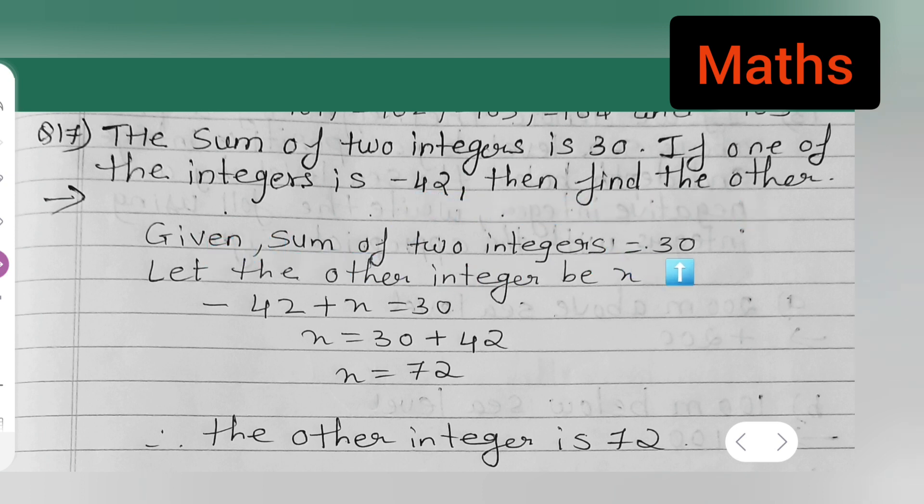Given: sum of two integers is 30. Let the other integer be x. We don't know the other integer, we need to find the other integer. Since you don't know, take it as x. Let the other integer be x.